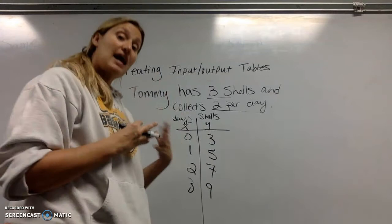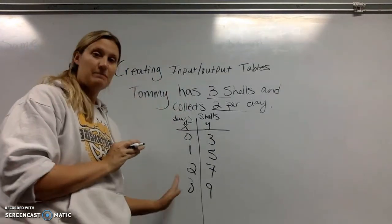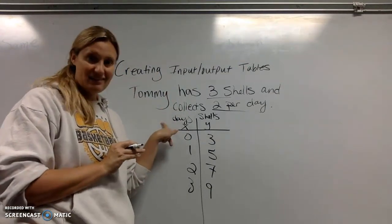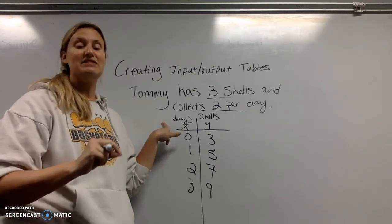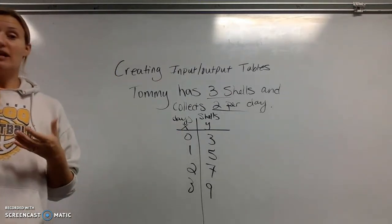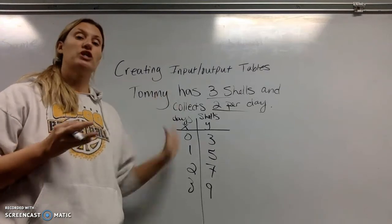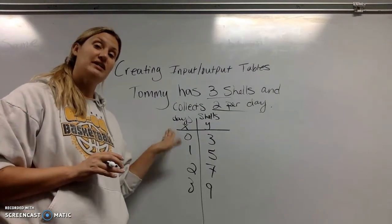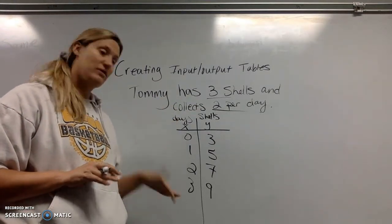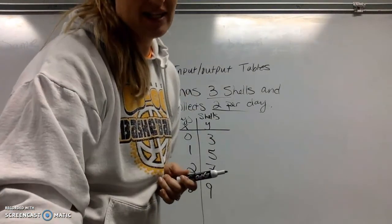And again, I want to think about my inputs. I'm not going to put negative numbers here because we're talking about days. I can't have a negative day passed. I don't want to talk about how many shells he gets in half a day. We're talking about how many shells he gets in a full day. So sometimes based on the story problem, you have to think about what your inputs are to match that.